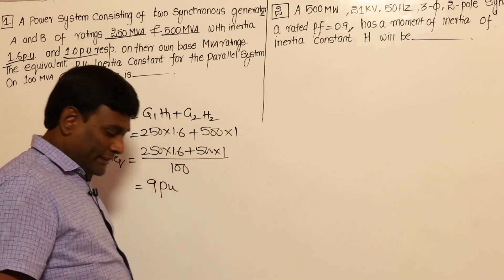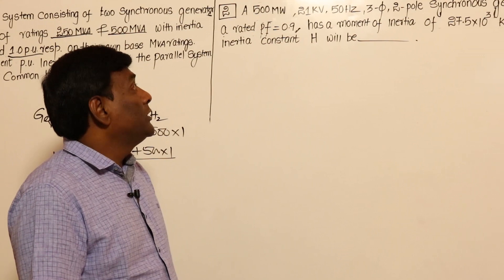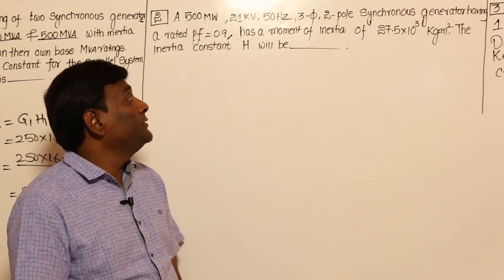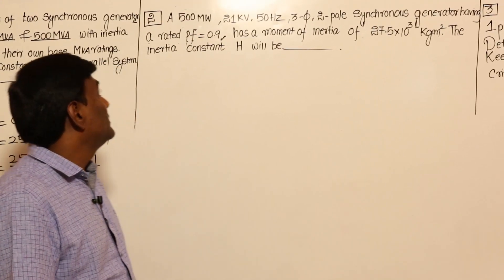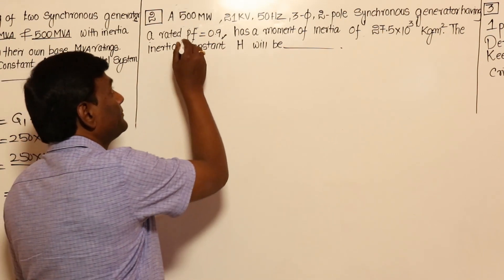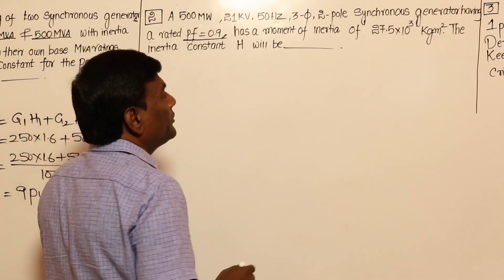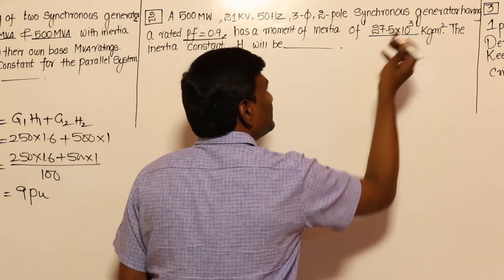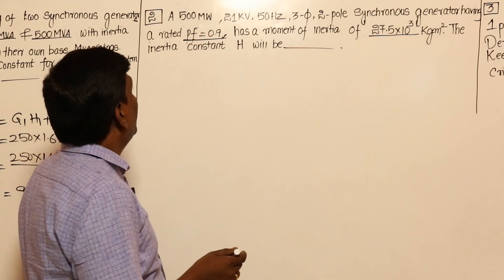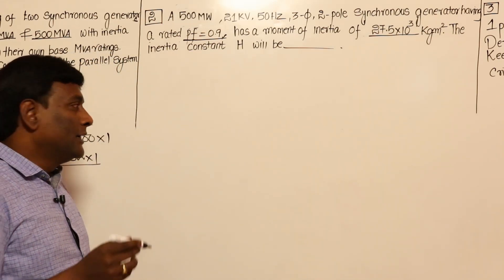Now let us take the second problem. A 500 MW, 21 kV, 50 Hz, 3-phase, 2-pole synchronous generator having a rated power factor of 0.9 has moment of inertia J given in kg·m². Find the inertia constant H.